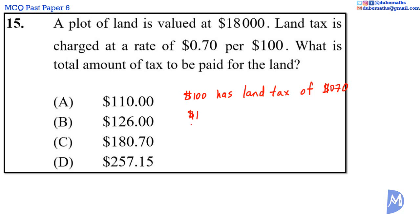A plot of land valued at $1 would have land tax of $0.70 divided by $100. And a plot of land valued at $18,000 would have land tax of $0.70 divided by $100 times $18,000.